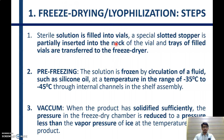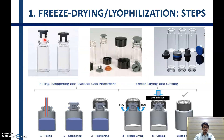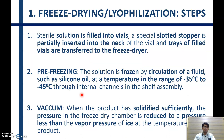The steps of freeze drying begin with filling the sterile solution into vials. A special slotted stopper is partially inserted into the neck of the vials and trays of filled vials are transferred into the freeze dryer. The first step is pre-freezing, in which the solution is frozen by circulation of fluids such as silicon oils at temperatures in the range of minus 35 to minus 45 degrees Celsius through internal channels in the shelf assembly.